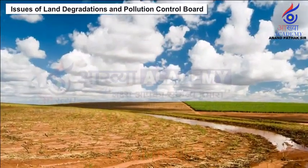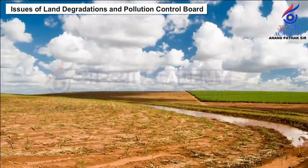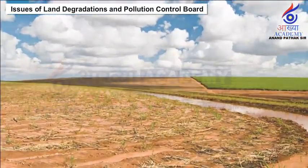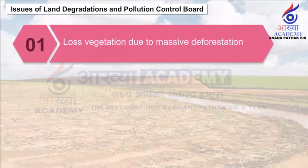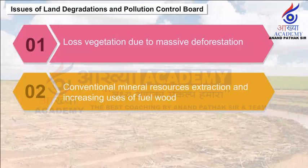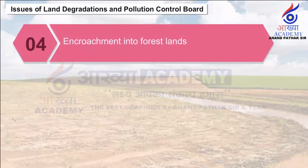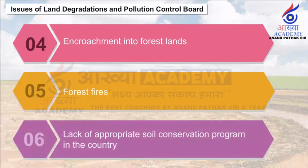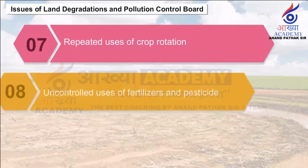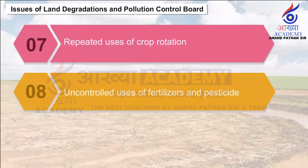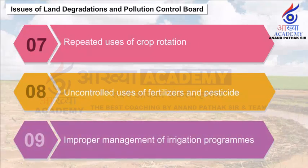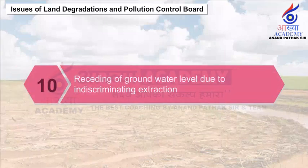Issues of Land Degradation and Pollution Control. Some important factors responsible for soil degradation in India are: loss of vegetation due to massive deforestation, conventional mineral resource extraction, increasing use of fuelwood, shifting cultivation trends, encroachments into forest lands, forest fires, lack of appropriate soil conservation programs, repeated use of crop rotation, uncontrolled use of fertilizers and pesticides, improper management of irrigation programs, and the receding of groundwater levels due to indiscriminate extraction.